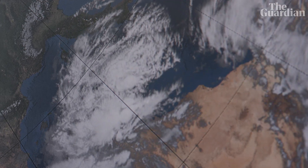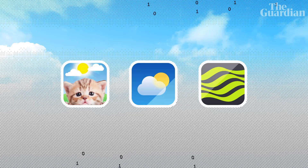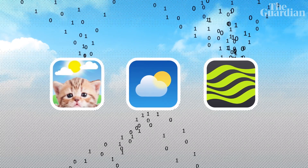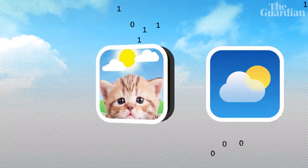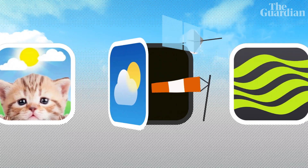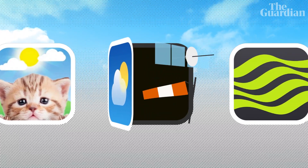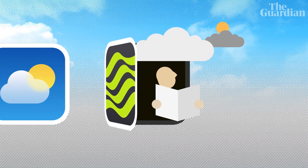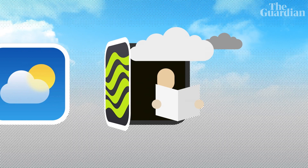Whilst this goes some way to explain how we can get forecasting wrong, it doesn't answer why there's so much discrepancy between apps. After all, shouldn't they all be wrong in the same way and at the same time? Well, it all depends on which meteorological sources they draw from and how they interpret that data. Some apps simply churn out computer model predictions. Others have access to a greater level of observations. And then there are those that employ meteorologists to interpret and correct the data, particularly in cases of unusual or extreme weather.